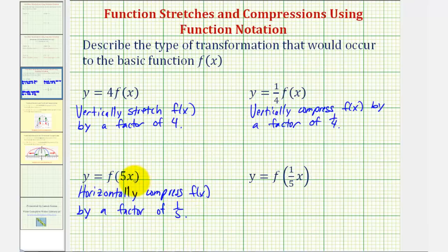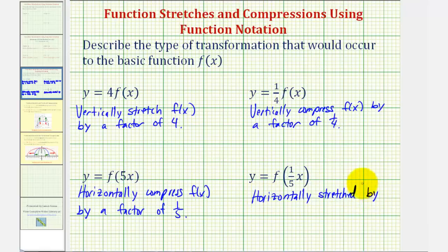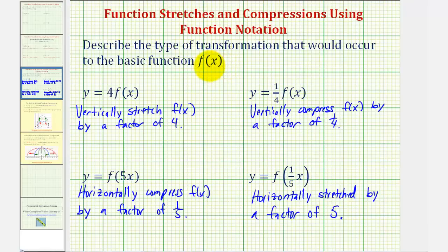The graph of f of five x would be one-fifth as wide as the graph of f of x. Therefore, y equals f of one-fifth x would be horizontally stretched by a factor of the reciprocal of one-fifth, or five — meaning the graph of f of one-fifth x would be five times as wide as the graph of the parent function f of x. I hope you found this explanation helpful.